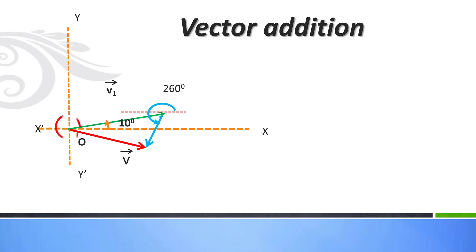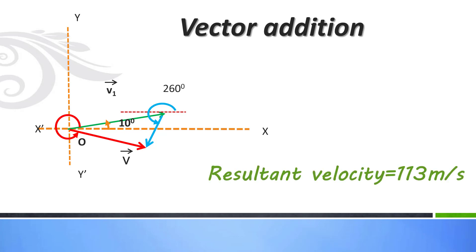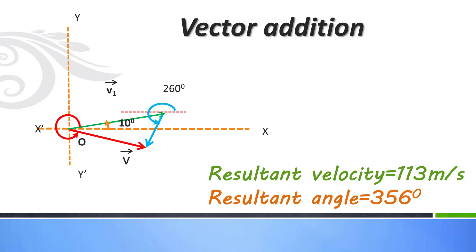The unknown angle is measured with a protractor. I obtained a resultant velocity of 113 meters per second at an angle of 356 degrees by head-to-tail rule. As we have discussed, head-to-tail addition has limited accuracy, so your result may vary slightly — you might get 112 or 111 m/s or a slightly different angle. That is acceptable because of the limited accuracy of this graphical method.